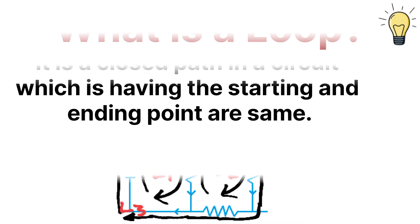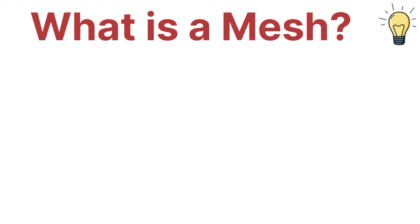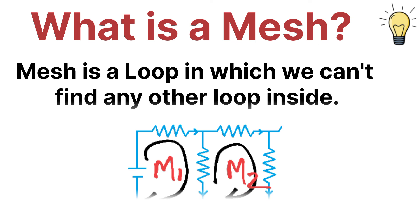Now let's talk about what is a mesh. A mesh is a loop in which we can't find any other smaller loop inside. So in a mesh, we can't find any other smaller loop inside the loop. A loop is a closed path where the starting point and ending point are the same, but in the case of a mesh, it is a loop in which we can't find any other smaller loop inside.